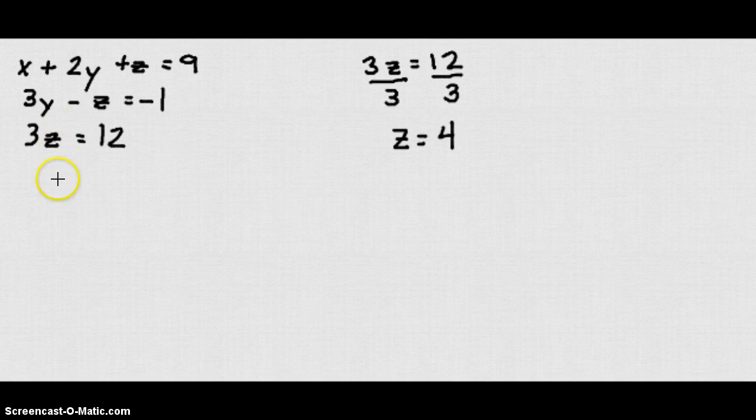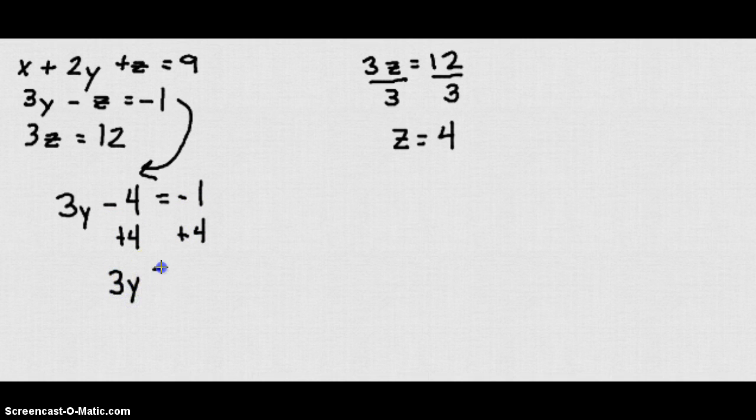So let's take the second equation, 3y minus z. We can put in 4 for z equals negative 1. Then we'll add 4 to both sides to get that y term by itself. We get 3y equals 3. Let's divide by 3. We get y equals 1.